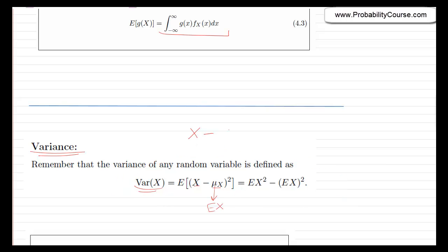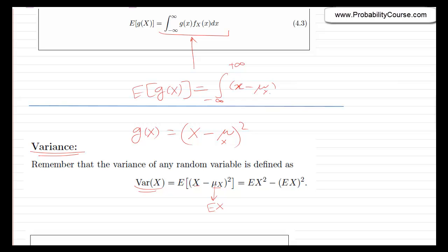If you think about it, (x minus mu_x) squared is a function of x — you can call this g of x. So I can obtain the expected value of this function using this formula: the integral from minus infinity to plus infinity of (x minus mu_x) squared times f_X(x) dx. This is the definition of variance of x.